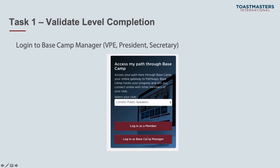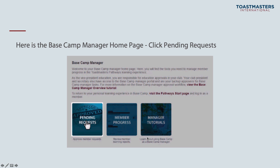The home screen is similar to your member login but with three different options. Pending requests is where you manage your level completions and external training requests. Member progress is where you track progress. And manager tutorials is a whole load of useful help, videos, and tips about getting the best out of Basecamp manager — if you're ever lost, go there first to find the answers.